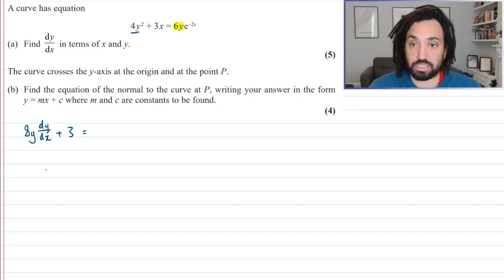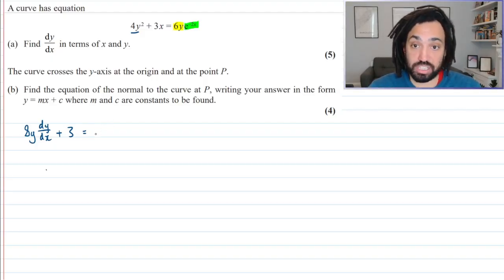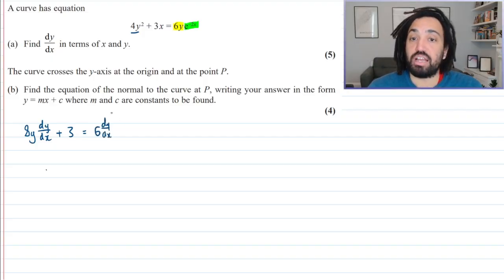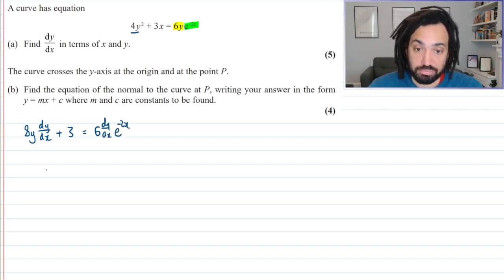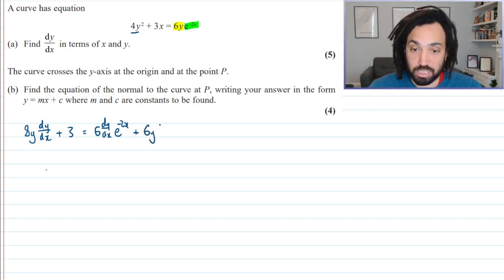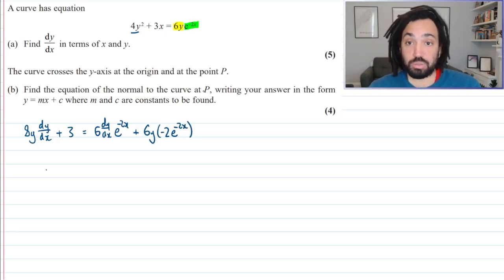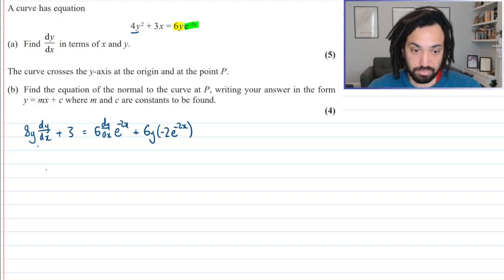So if it's a product, what I like to do is just highlight the first function like that and then highlight the second function like that. Because what we're going to do is we are going to differentiate the yellow one first. And that's again implicit. So differentiating 6y gives me 6, but then I must multiply by dy by dx. And then I keep the green one exactly the same. I put a plus sign in the middle. And now this time I keep the yellow one exactly the same and I differentiate the green one, which is going to give me minus 2e to the minus 2x.